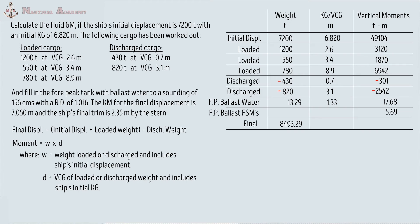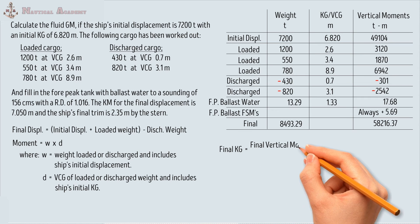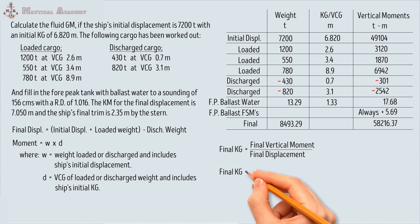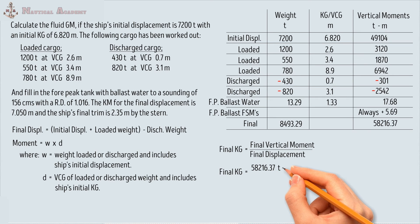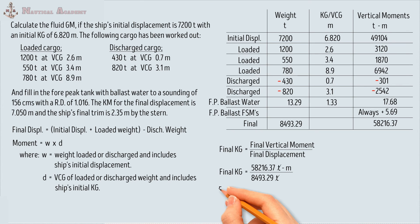For the final moment, do the same as the final displacement: combine all the positive moments, and always remember that the free surface moment will always be added. Then subtract the negative or discharged moment. The final vertical moment is 58,216.37 ton-meter. To determine the final KG, the formula is: final KG equals final vertical moment divided by final displacement. So we have 58,216.37 ton-meter divided by 8,493.29 tons. The final KG — or fluid KG, since free surface correction has been applied — is 6.854 meters.